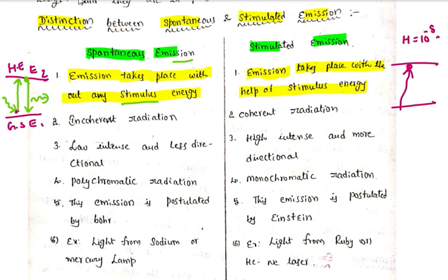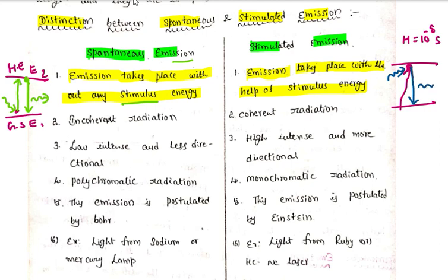The lifetime of an atom in the excited state — for example, hydrogen — is on the order of 10 to the power of minus 8 seconds. But when we apply a stimulus energy force, we induce a transition and produce stimulated emission.